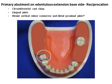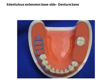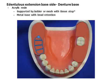The reciprocal element for the primary abutment on the extension base side may be a circumferential cast clasp or plate. The illustration shows a vertical bar monoconnector with distal proximal plate, commonly used as the reciprocal element when using the eye bar retainer. The base for the distal extension side in most cases is acrylic resin retained by ladder.